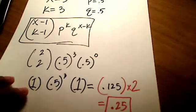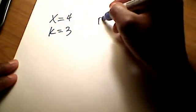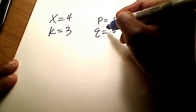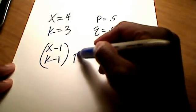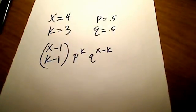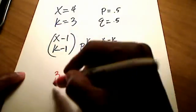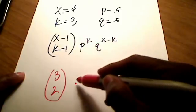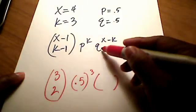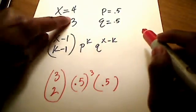Let's try it again with x equal to 4. In this scenario, x equals 4, k equals 3, little p is 0.5, and little q is also 0.5. The formula is x minus 1 over k minus 1, times p to the k, times q to the x minus k. So I've got 4 minus 1, which is 3, over k minus 1, which is 3 minus 1, or 2. Then 0.5 raised to the 3rd power, and this time x minus k is 4 minus 3, which is just 1 — so q doesn't go to 0 this time.